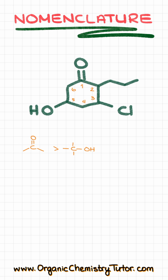Now, the substituents we have in this case are as follows: we have the propyl group over here, then we have the chloro group, and we have the OH. Normally, OH is going to be an alcohol and we would use -ol as the ending. But since OH is not the major functional group in this case, instead of the ending, we are going to use the prefix form, which is hydroxy.